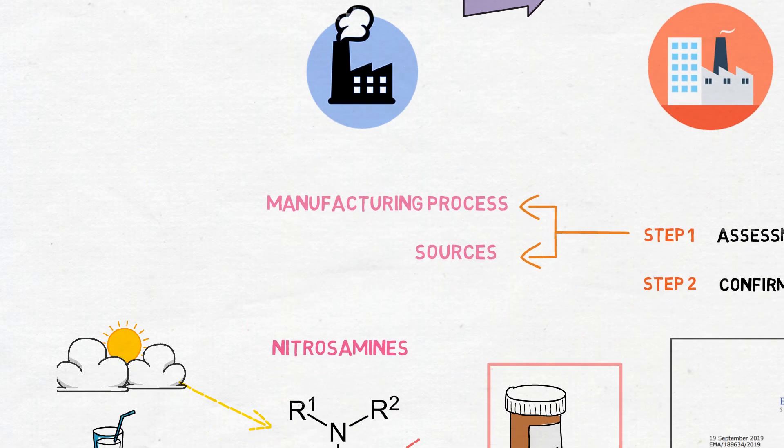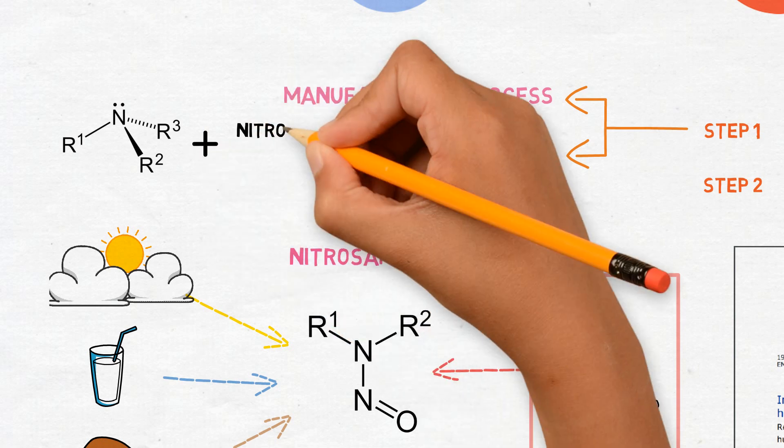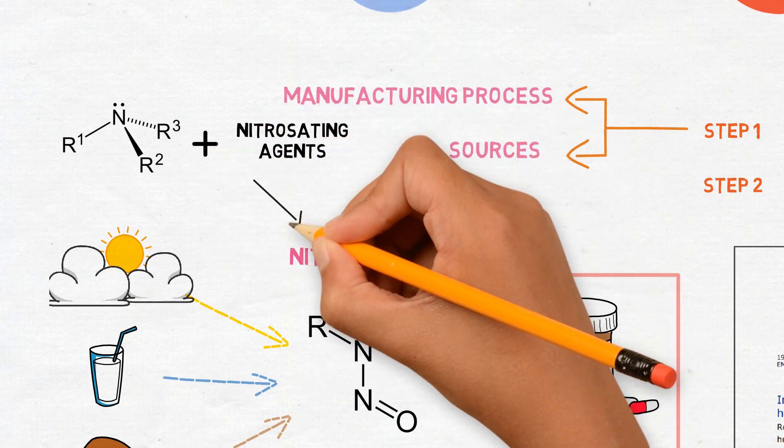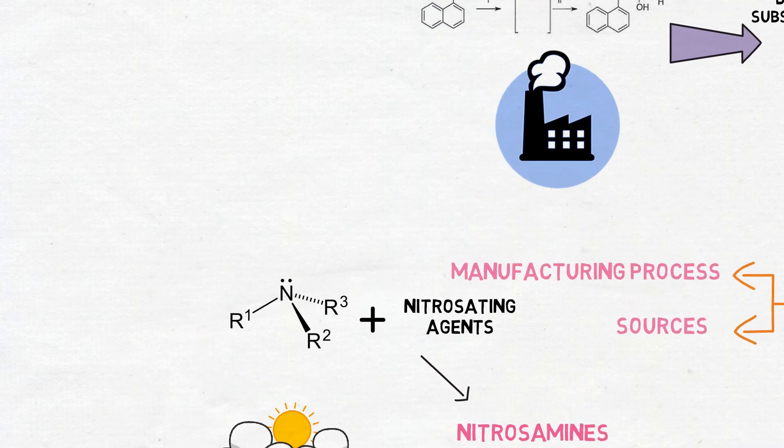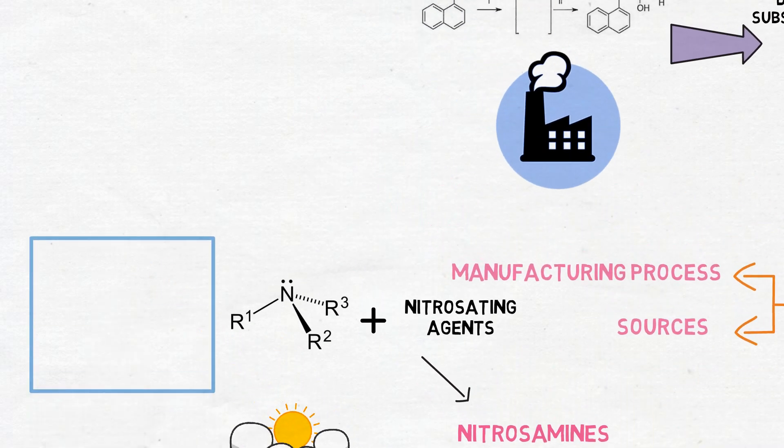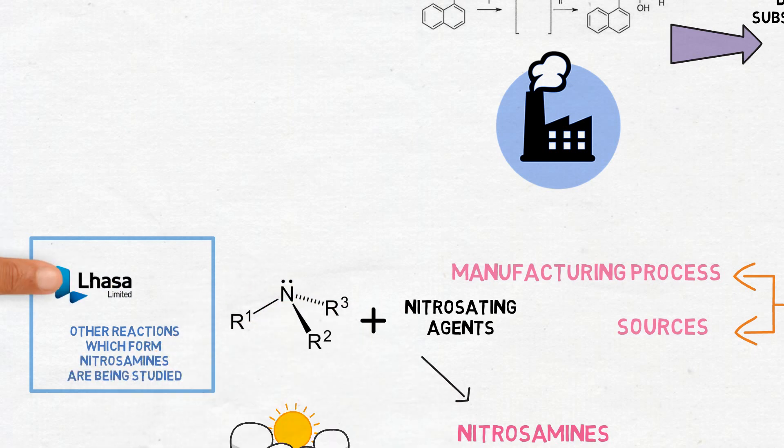In this evaluation, all sources of amines and nitrosating agents must be considered, keeping in mind that both precursors must be present for the nitrosamine to be formed. Other reactions which can form nitrosamines are being studied by some groups and may also be considered in this evaluation.